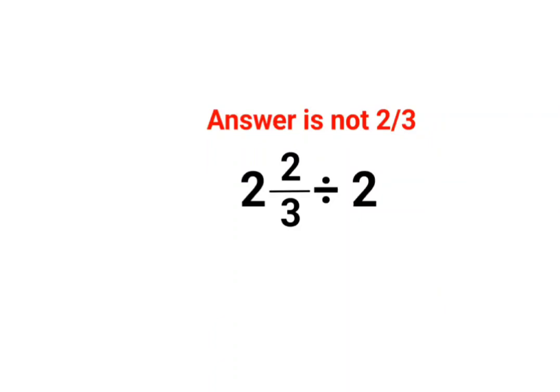Welcome everyone. Today we are going to understand why the answer for this is not supposed to be 2/3. A lot of people think that this 2 and 2 can get cancelled so the answer should be 2/3. No, that is not how this works.